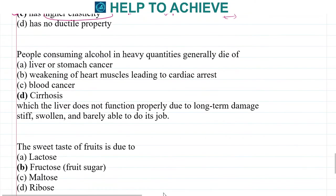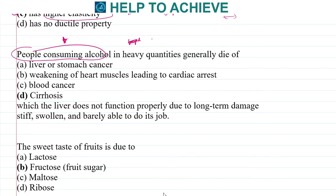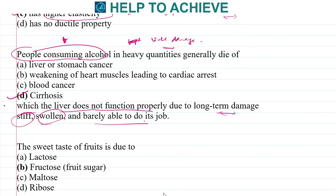People who consume heavy alcohol suffer from liver damage — not lung disease but liver damage. This happens because of a disease known as cirrhosis (C-I-R-R-H-O-S-I-S), in which the liver does not function properly due to long-term damage. If you consume more alcohol, the liver becomes stiff and swollen and cannot perform its job. People who consume alcohol can die of cirrhosis.